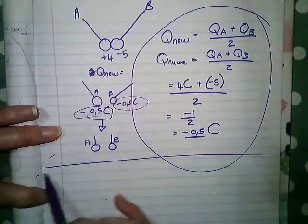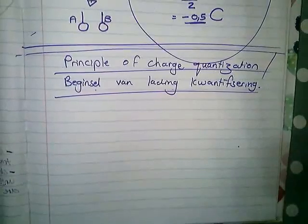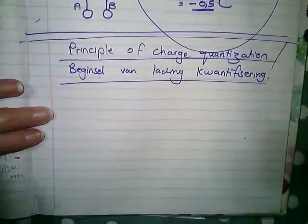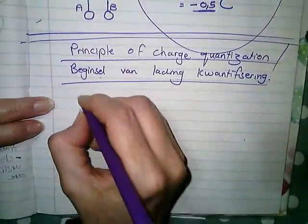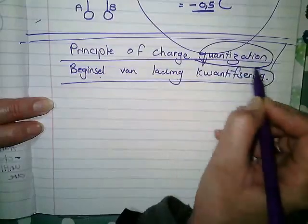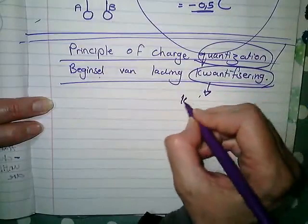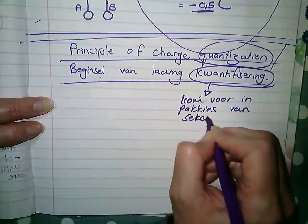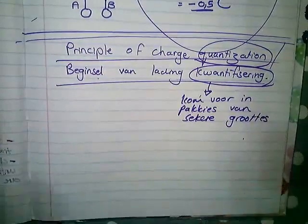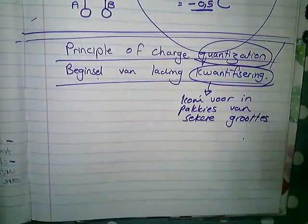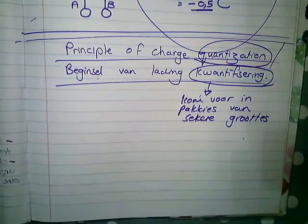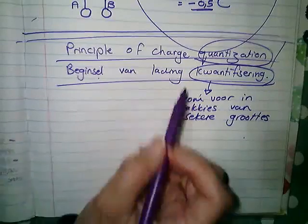Now the principle of charge quantization, die beginsel van lading kwantifisering, beteken net dat lading kom voor in sekere groottes pakkies. So quantization, kwantifisering, beteken kom voor in pakkies van sekere groottes. We spoke about quantization of light as well when we spoke about photons. One photon is a packet of light, so charge also comes in packets of certain sizes.